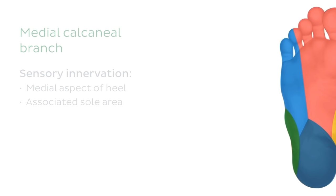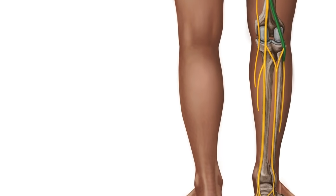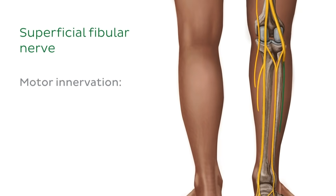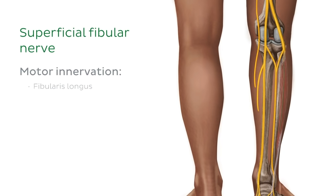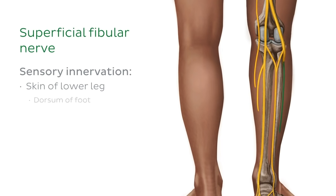Now it's time to find out what happens to the common fibular nerve. The common fibular nerve divides into two terminal branches. The first one is the superficial fibular nerve, which provides motor innervation to muscles of the lateral compartment of the leg, which includes the fibularis longus and the fibularis brevis muscles. It also provides sensory innervation to the skin of the lower leg and the dorsum of the foot.